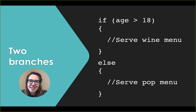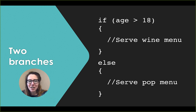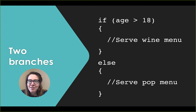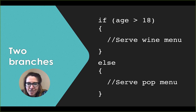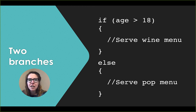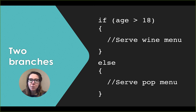If there are two branches — something we do when the condition is true and an alternative when it's false — we apply the if-else combination. We have the if statement followed by the Boolean condition age greater than 18. In that case we would serve the wine menu; otherwise, on the false branch after else, we serve the pop menu. If there's an alternative for when the condition is false, you need both an if and an else branch.